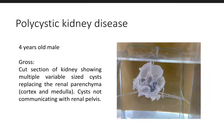So in the child's type — this one is a specimen of a child, that's why it's written '4 years old male.' So this one is of child's polycystic kidney disease.